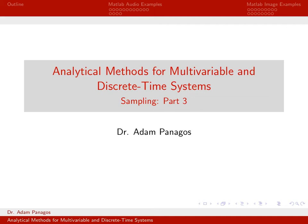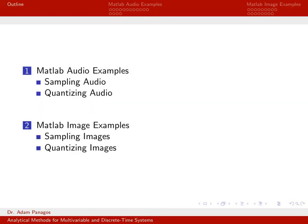To wrap up our discussion of sampling in part three, we're going to look at some real-world examples of working with both audio signals and images. We're going to start off working in MATLAB with some audio signals, looking at both sampling (down-sampling) those signals and also quantizing the amplitude level. Then we'll also look at images and do similar things in MATLAB.